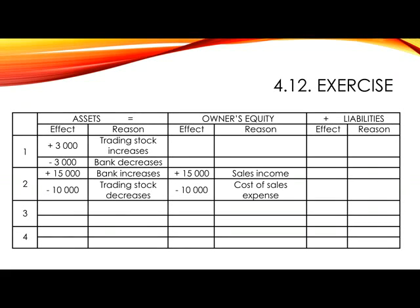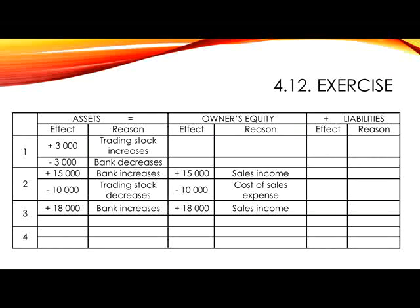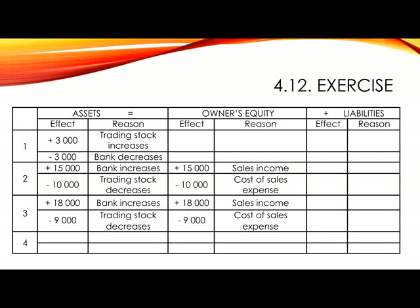Number 3: Cash sales R18,000, cost price R9,000. Again, we want to separate the sales and the cost of sales. For the sales, we need to show that assets increase as bank increases and equity increases because of sales income — both will have plus R18,000. At the same time, we need to consider the cost of R9,000: the trading stock asset needs to be converted into a cost of sales expense, shown as assets minus R9,000 and equity minus R9,000. The overall effect is an increase in assets and in equity of R9,000, which is the gross profit that was made.